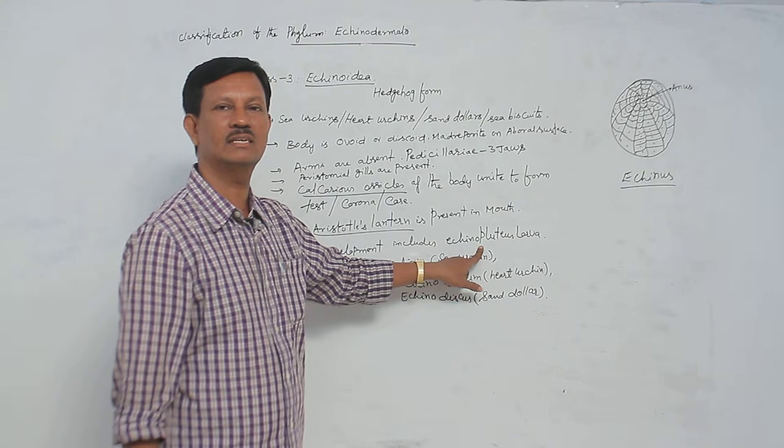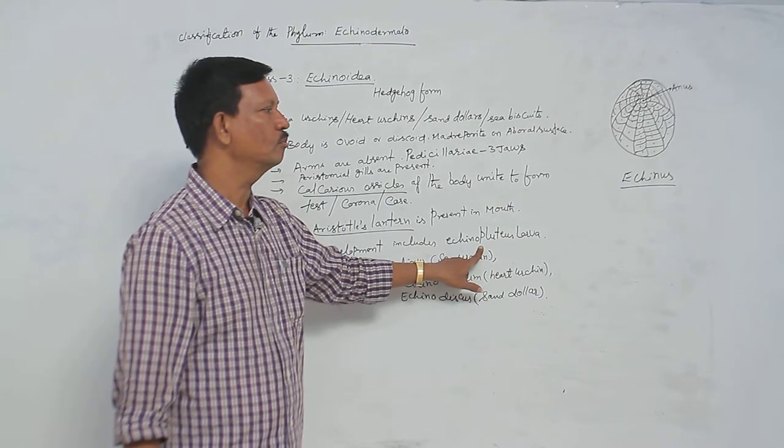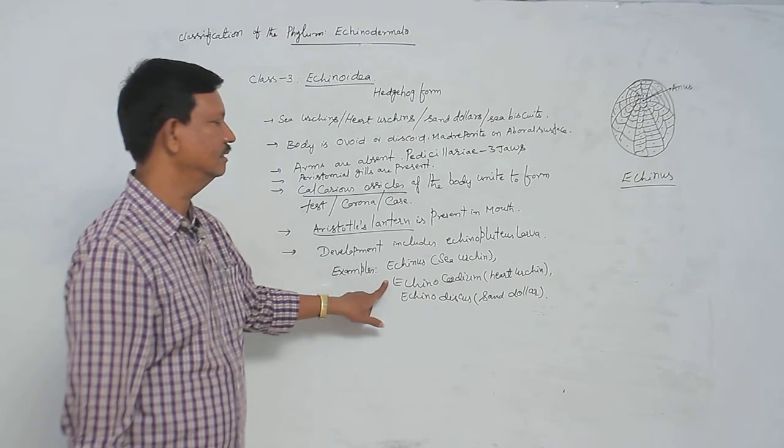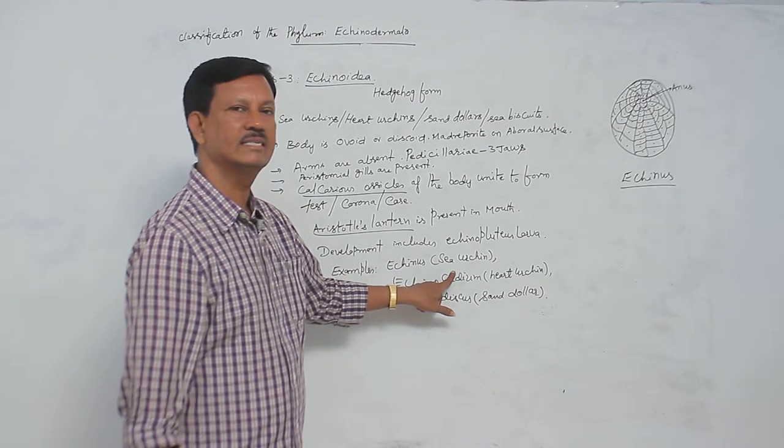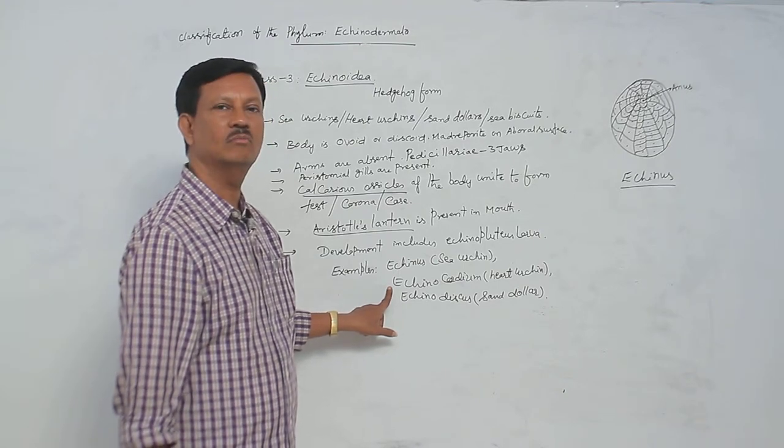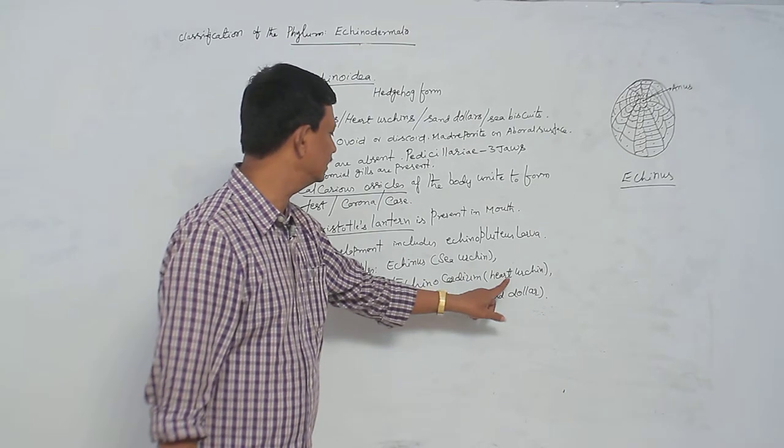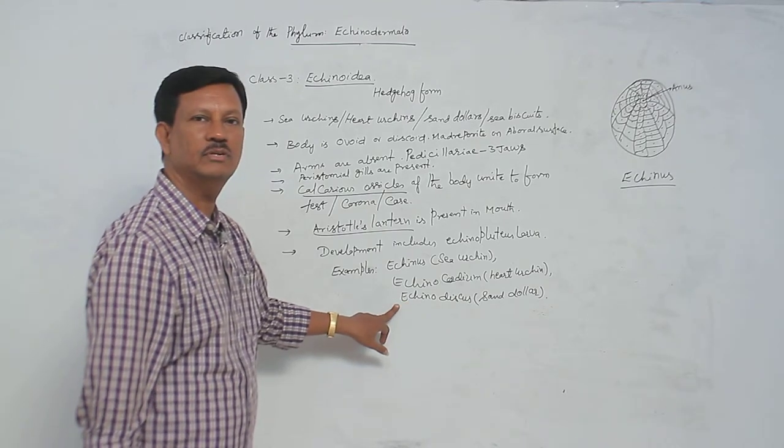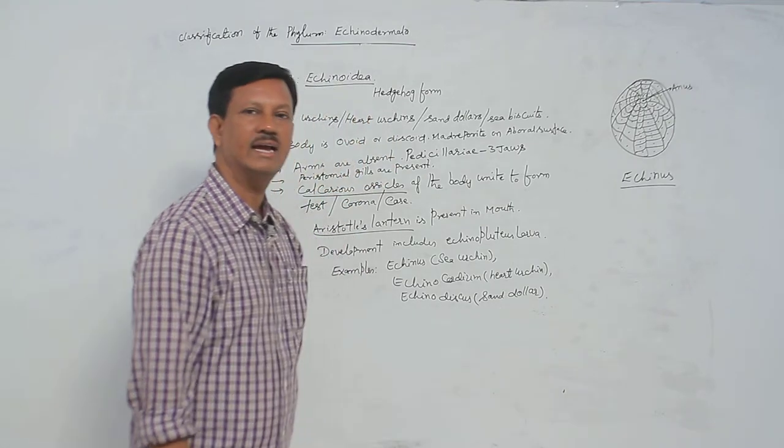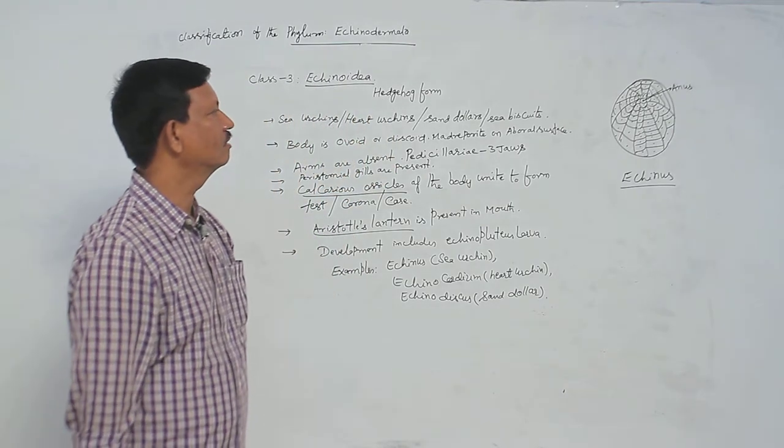The larvae of this class is known as Echinopluteus. The best examples are Echinus, commonly known as sea urchin; Echinocardium, commonly known as heart urchin; and another example is Echinodiscus, commonly known as sand dollars.